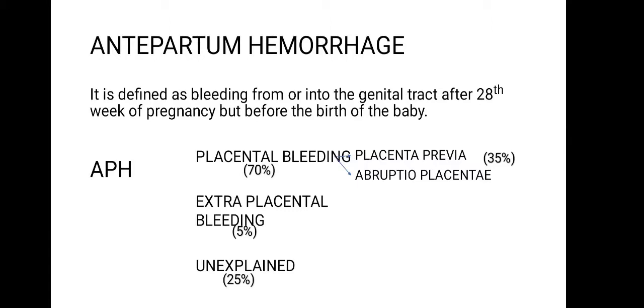APH is mainly due to three reasons. First is placental bleeding, which includes placenta previa and abruptio placenta. The next cause is extra-placental bleeding — when the mother has cervical polyps, carcinoma of the cervix, varicose veins, or any local trauma. Causes that don't fall under either category fall under unexplained.